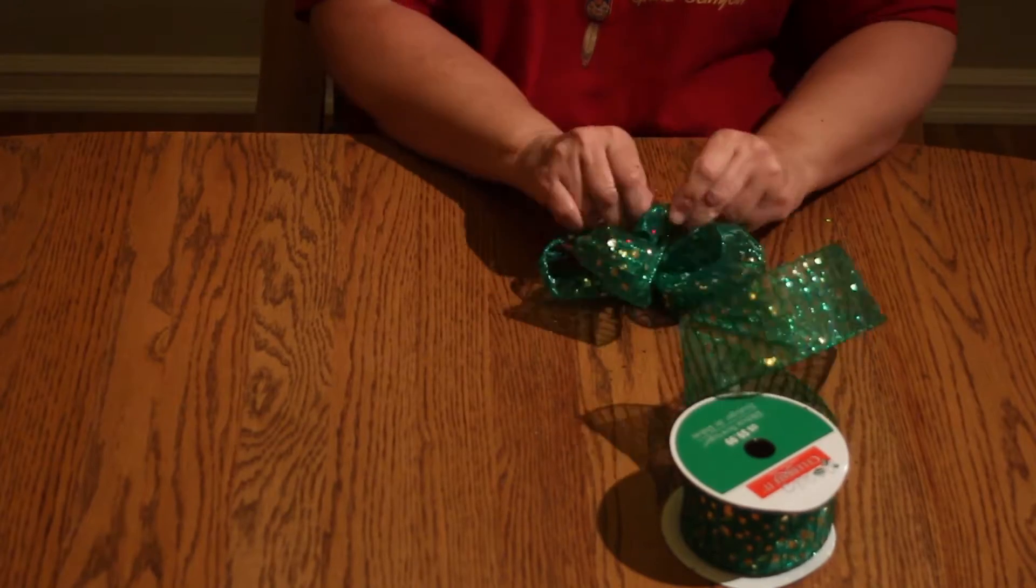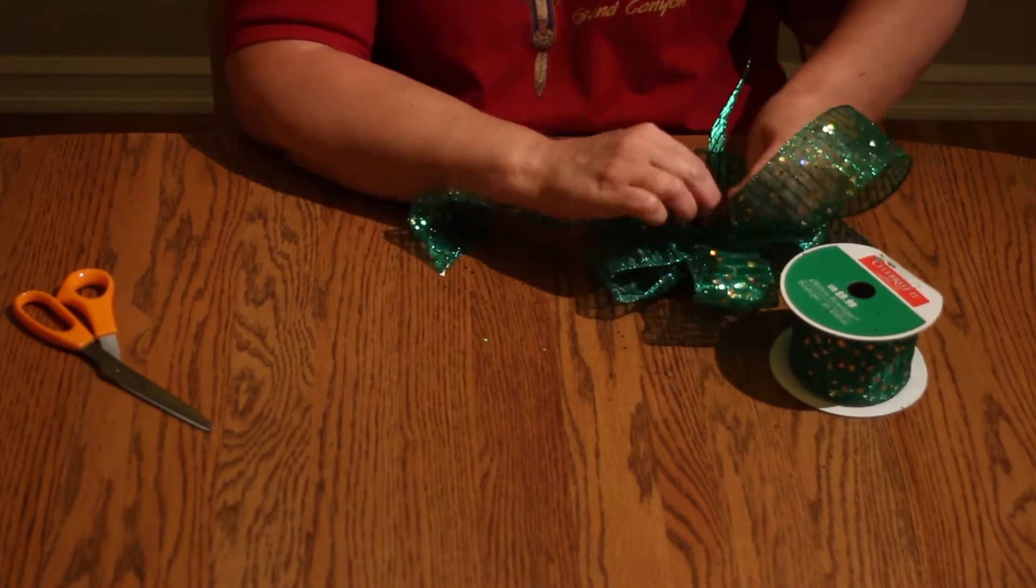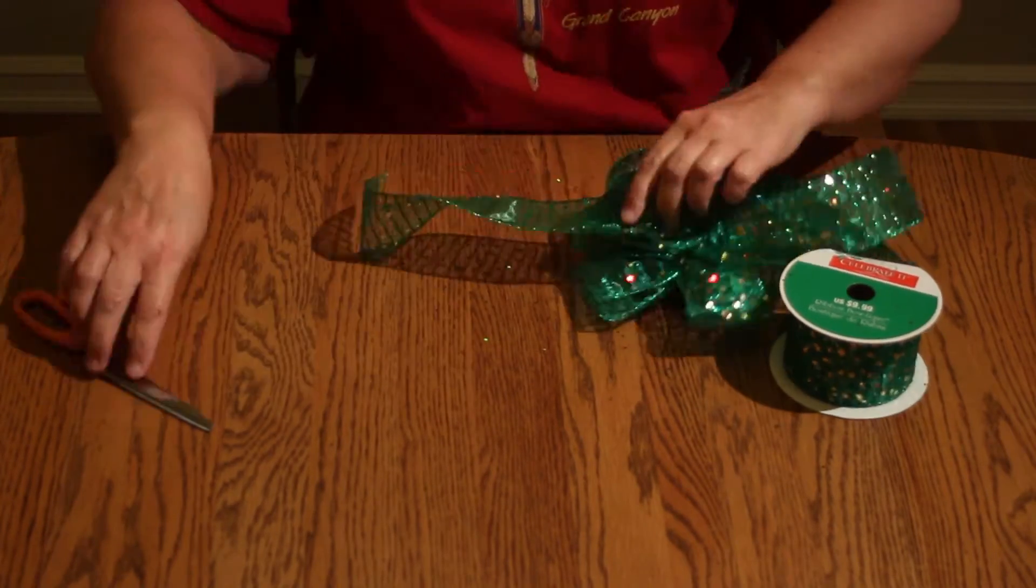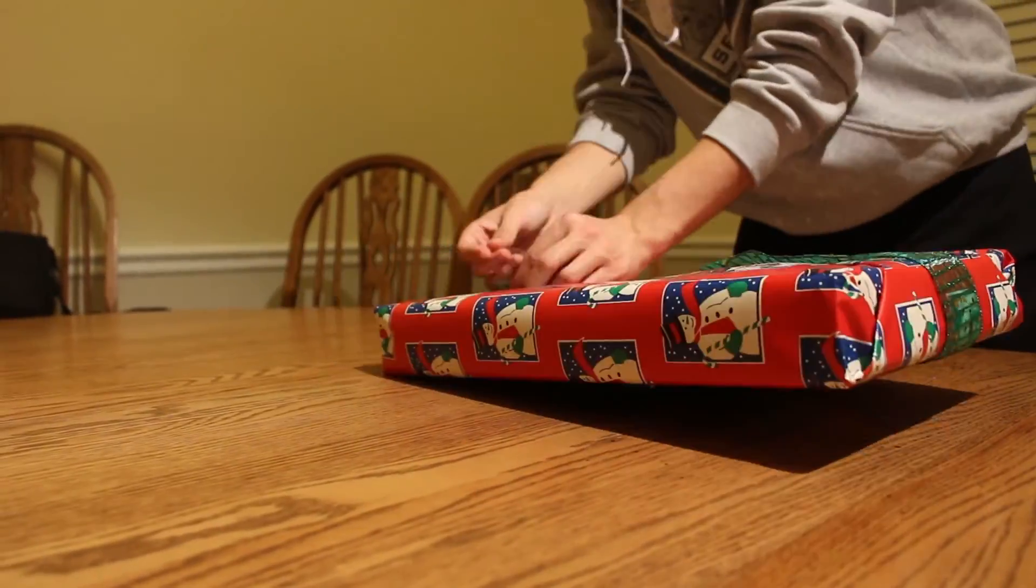After you've finished making your loops, you can fluff out the bow and make it look how you want. Cut the bow to the length you want and then tape it to the bottom of the box.